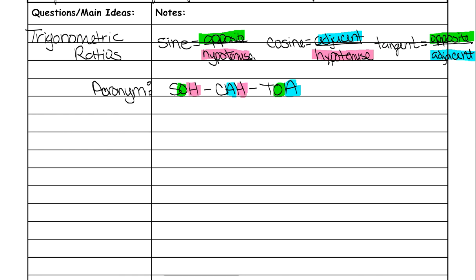You will always have access to formula charts, or I will give you the formula if I forget the formula charts. So it's not something you naturally have to memorize — but sine is opposite over hypotenuse, cosine is adjacent over hypotenuse, and tangent is opposite over adjacent. So what does all that mean? I'm going to show you now.